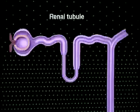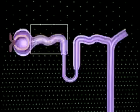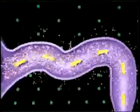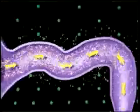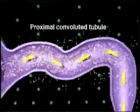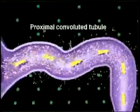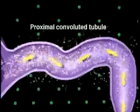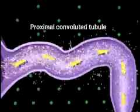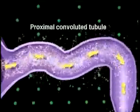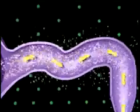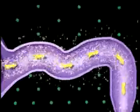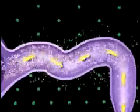The next nephron section, the renal tubule, has three parts in series. Filtrate within Bowman's capsule enters the proximal convoluted tubule, where reabsorption of important molecules and ions from filtrate back into blood occurs.